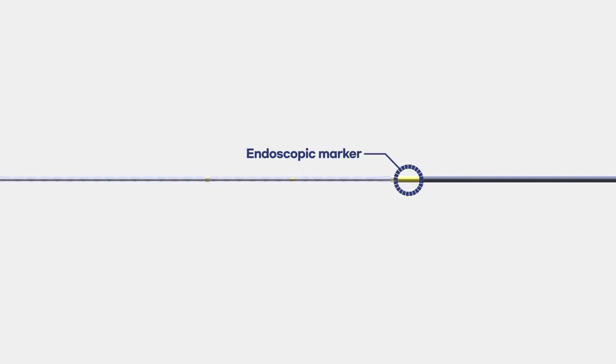The yellow endoscopic marker indicates the proximal end of the preloaded stent.